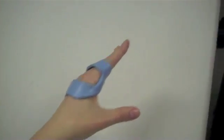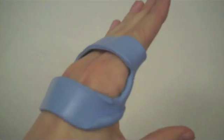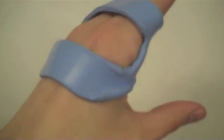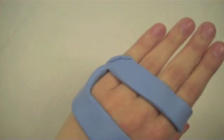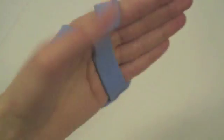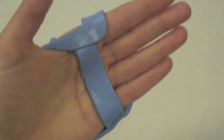Note how the splint is rolled out by the first web space to allow for thumb opposition and flexion. The bar should cover the palmar aspect of the MCP joints.